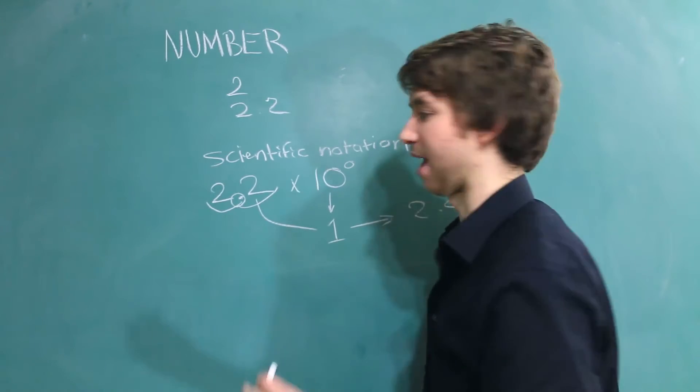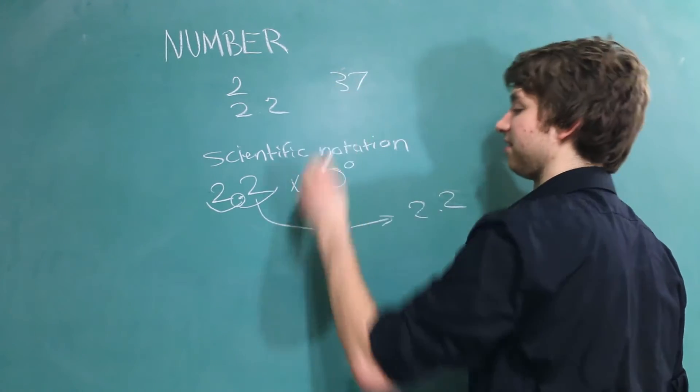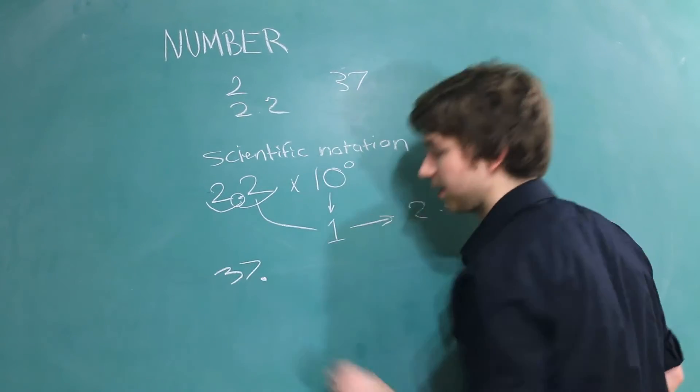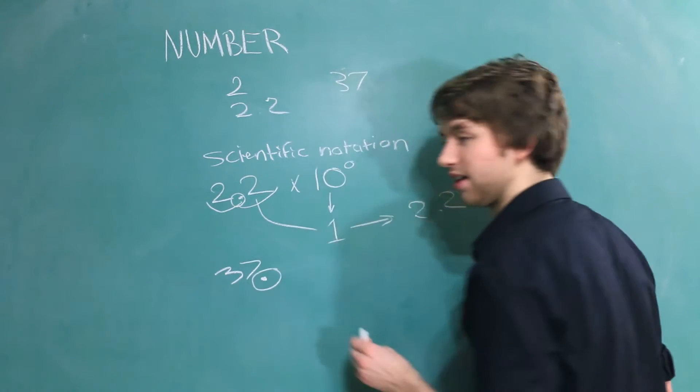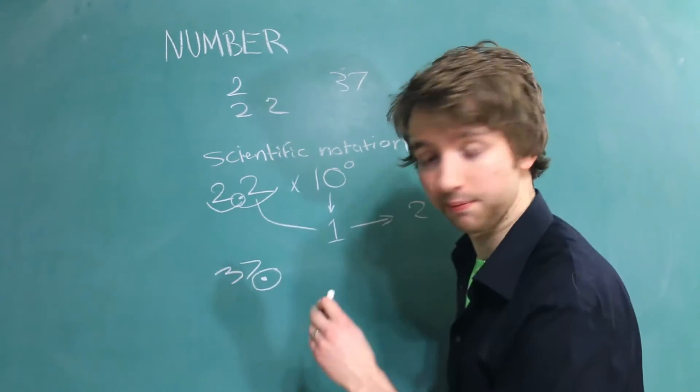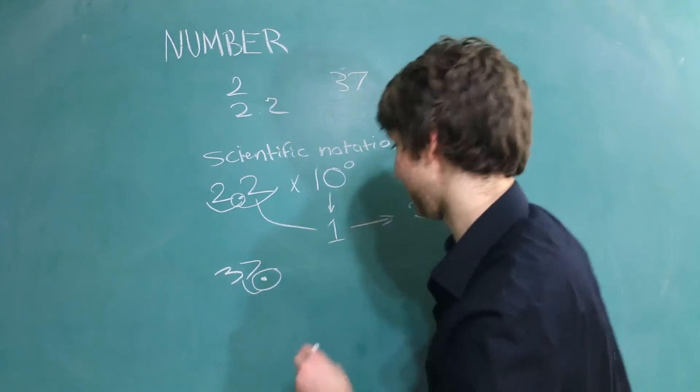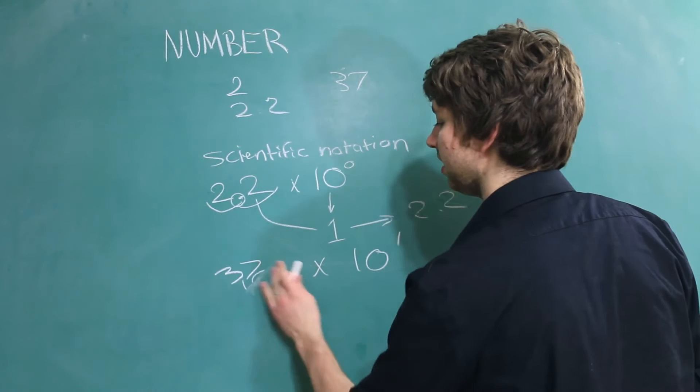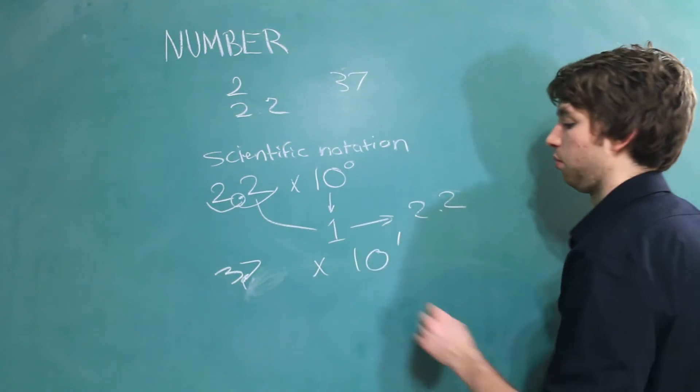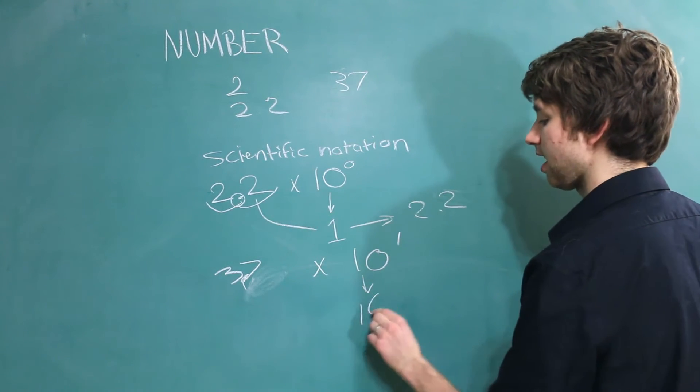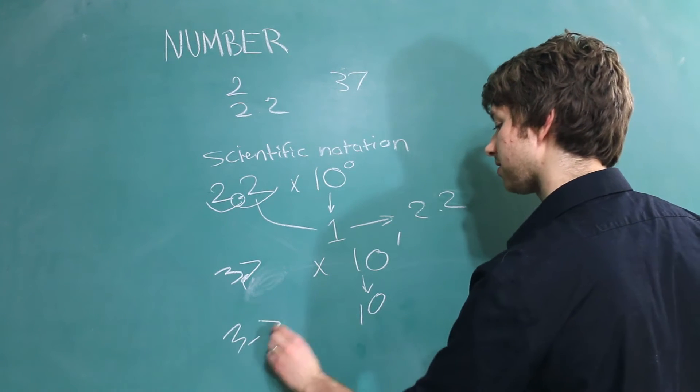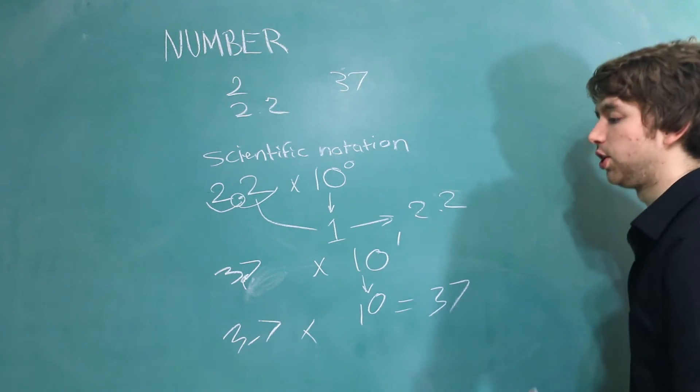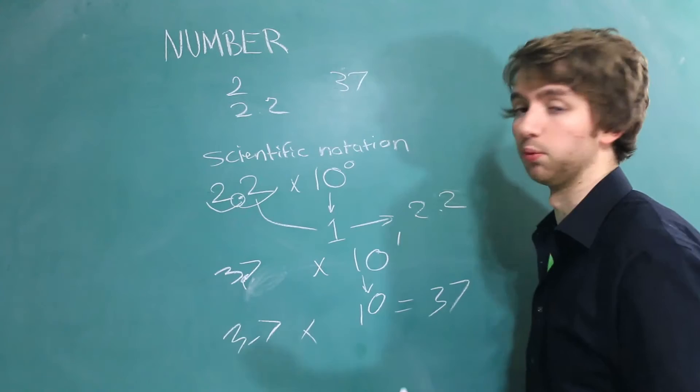But let's say we had the number 37, that's a good example. 37 dot. Now we could take this dot and move it, and that will change the power of 10. So now we have 3.7 times 10 to the 1, which evaluates to 10. So 3.7 times 10 equals 37. You can see we represented the same exact number two different ways.